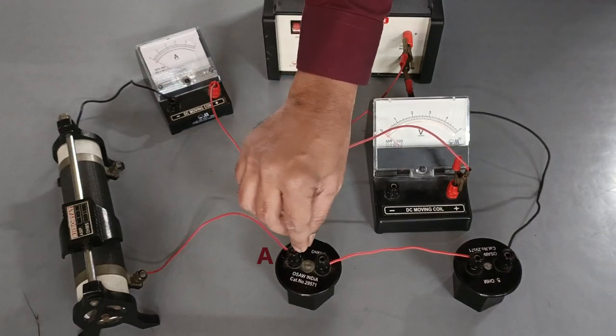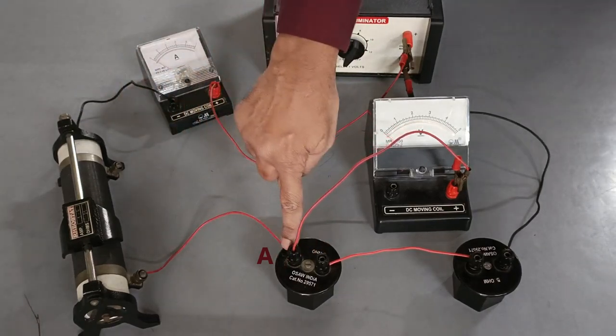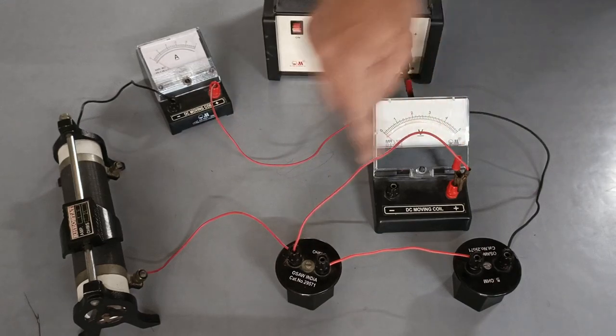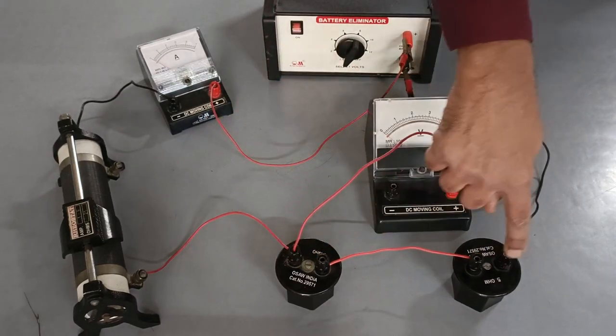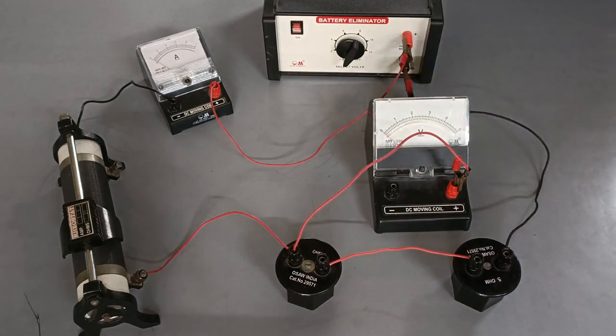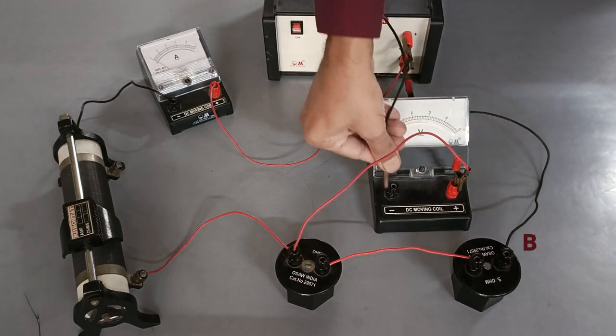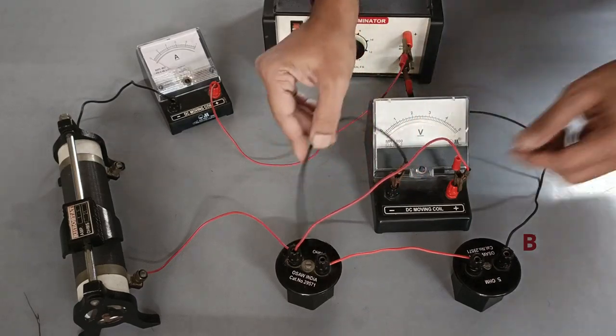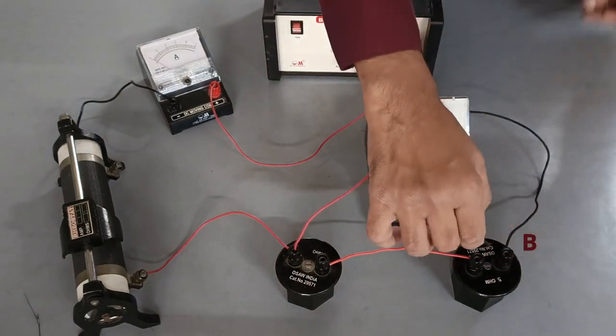Connect the positive terminal of the voltmeter with end A of resistor number 1, from which the current enters resistance number 1. Connect end B of resistor number 2 with the negative terminal of the voltmeter. End B is where the current leaves resistor number 2.